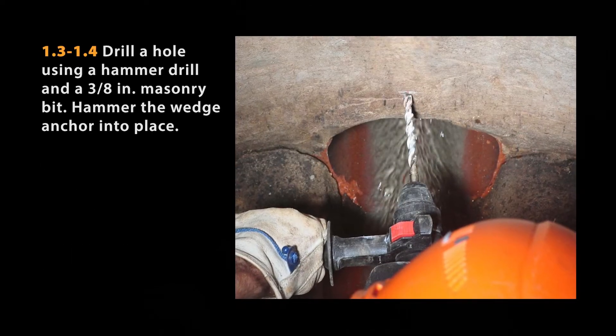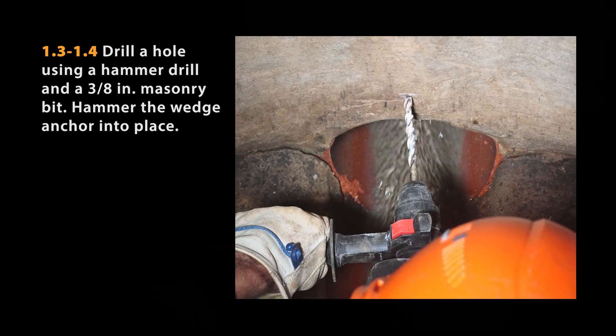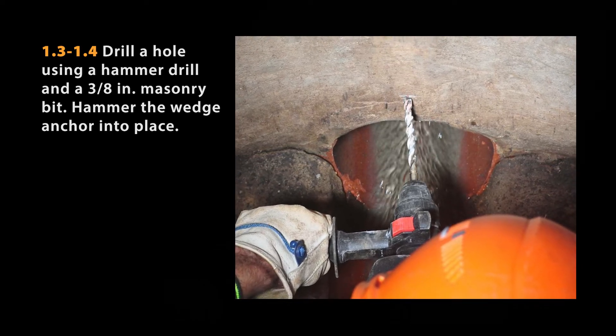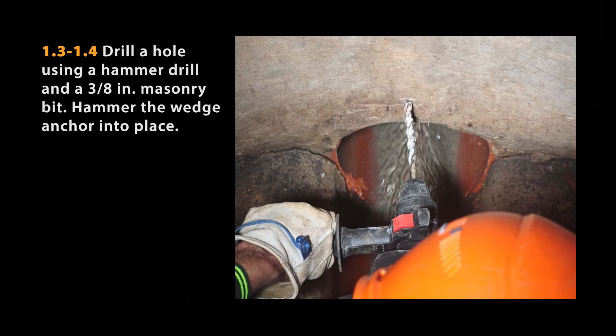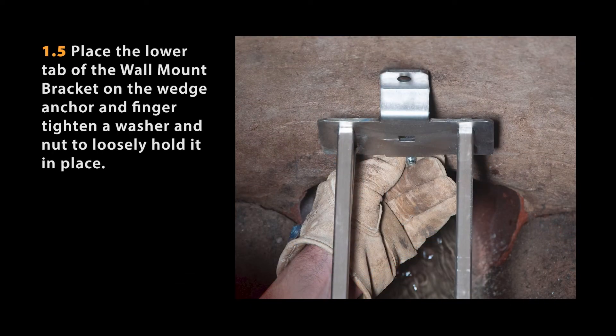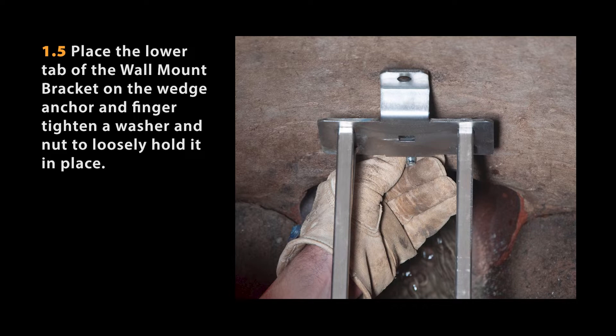Using the hammer drill and a 3/8 inch masonry bit, drill a hole at the marked spot. Hammer the wedge anchor into place. Place the lower tab of the wall mount bracket on the wedge anchor and place a washer and nut on the anchor and finger tighten.